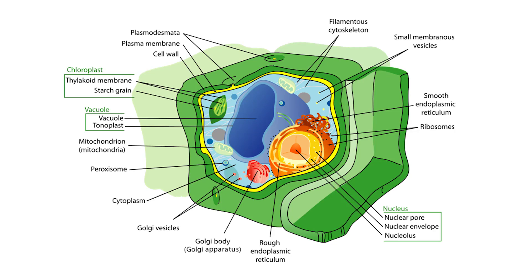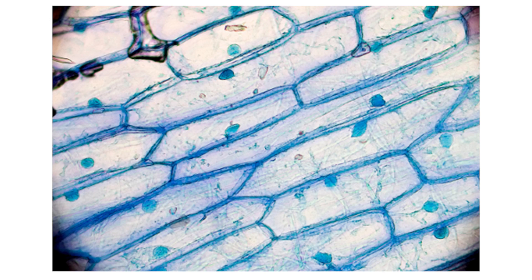Take a cell in science, for example. Microbiology can often be a difficult concept to teach, especially as students can't view the internal organelles of a cell themselves. Microscopes can only take students so far and prohibit them from seeing how organelles work together to create a fully functioning cell.